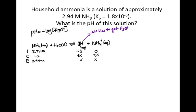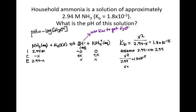So we'll put these back into our KB expression. So KB equals x squared divided by 2.94 minus x and the value of KB is 1.8 times 10 to the minus 5. We got that from our problem. So once again we can make our small x approximation where we can assume that 2.94 minus x equals 2.94 and that's going to simplify our math. So x squared divided by 2.94 equals 1.8 times 10 to the minus 5. So if you multiply both sides by 2.94 and take the square root, you get that x equals 7.27 times 10 to the minus 3. So now we need to check our assumption.